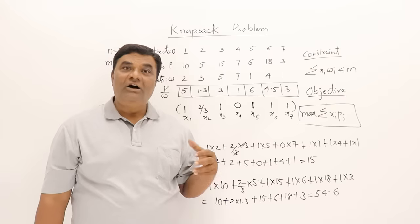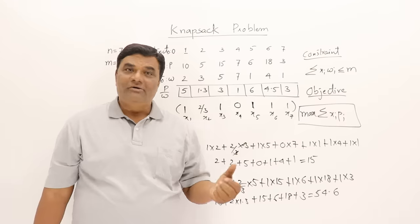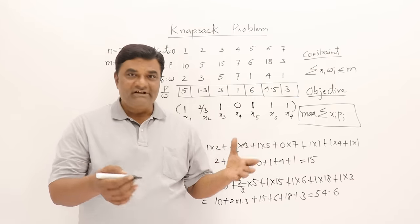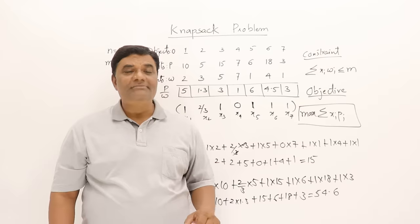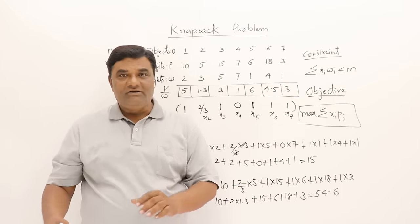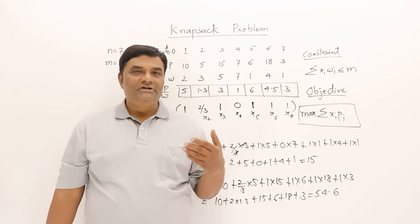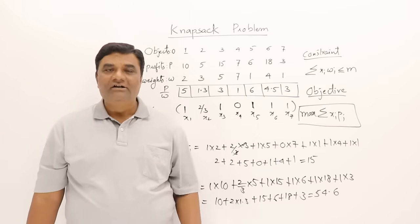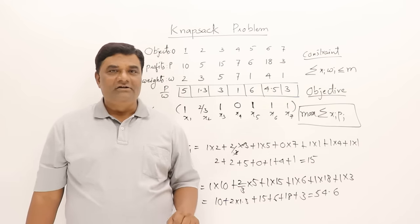There is also the zero-one knapsack problem, which is different. Here fractions of objects are allowed, but in the zero-one knapsack problem the objects are indivisible — either you include the whole object or you don't. This is like container loading with a washing machine: you cannot take half of it. I will be making videos for all topics in greedy method, then move on to dynamic programming and cover the entire syllabus. Thank you for watching.